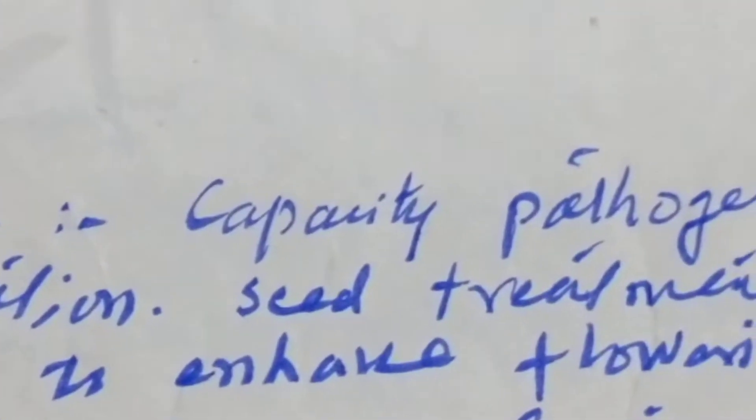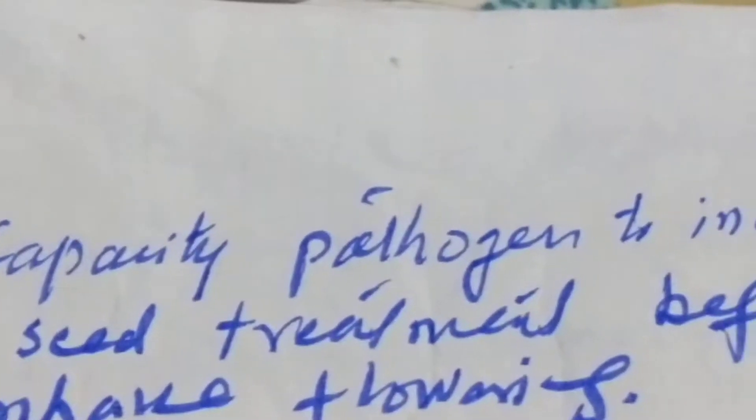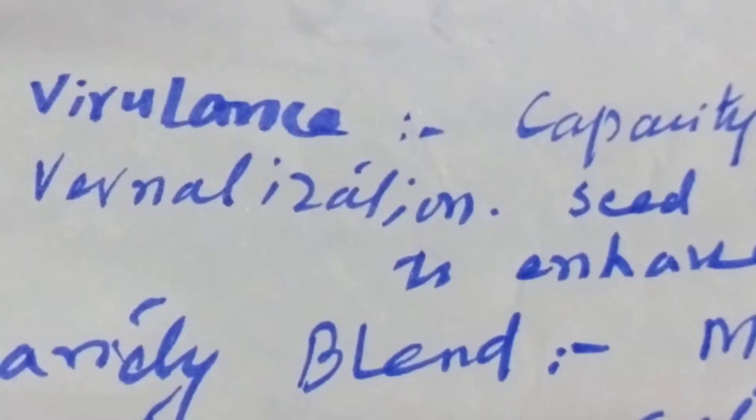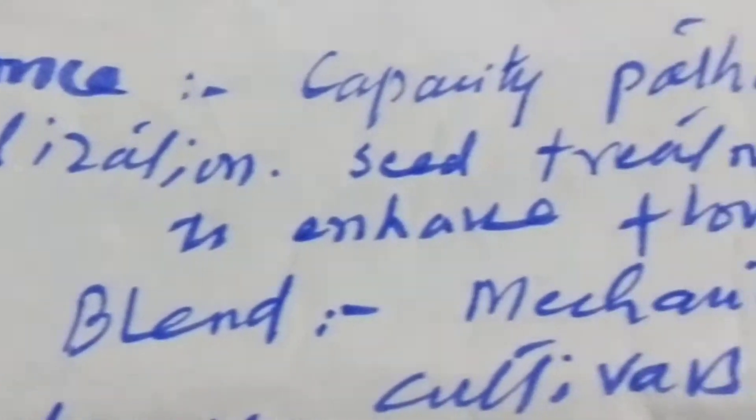Students, some of the important terms to understand in a simple way are as follows. Virulence is the capacity of a pathogen to incite a disease. Vernalization is seed treatment before sowing to enhance flowering.